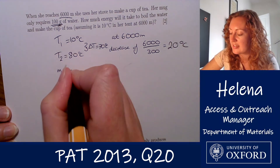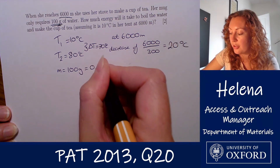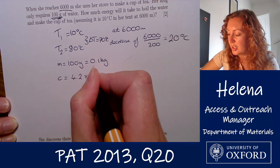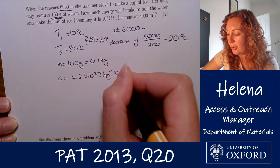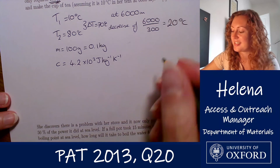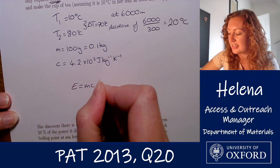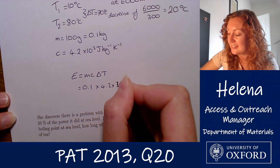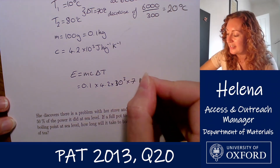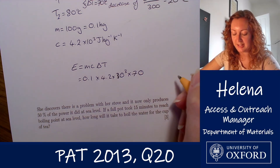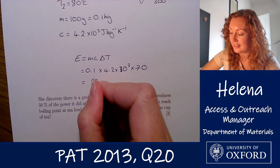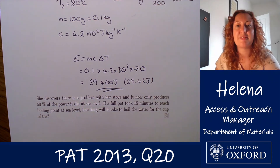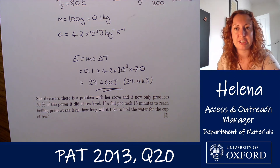The mass of the water is 100 grams, which equals 0.1 kilograms — making sure we have consistent units. We have the same specific heat capacity as before: 4.2 × 10³ joules per kilogram per kelvin. Putting these values into E = mcΔT: mass is 0.1, times 4.2 × 10³, times the new delta T of 70. That gives us a value of 29,400 joules, or 29.4 kilojoules — the amount of energy it takes to boil a mug of water for a cup of tea at that height.